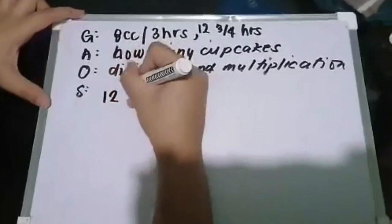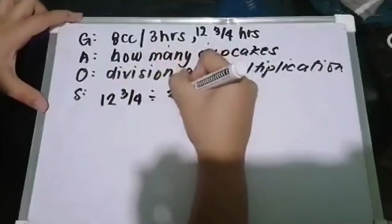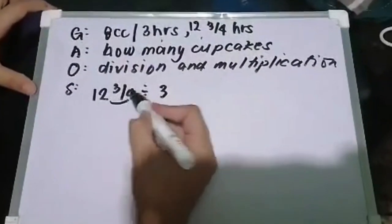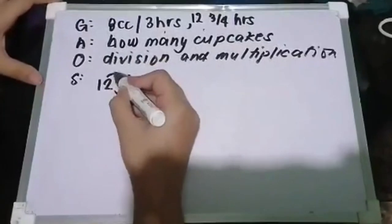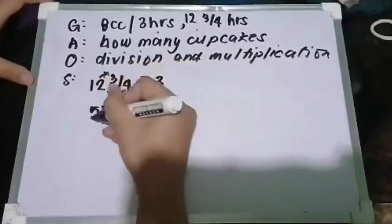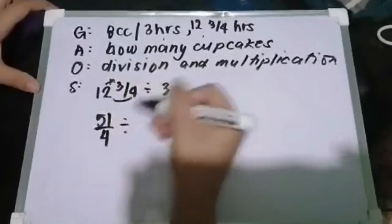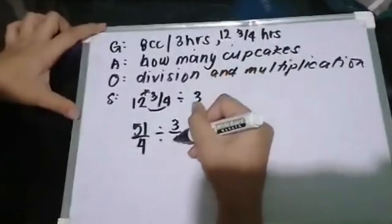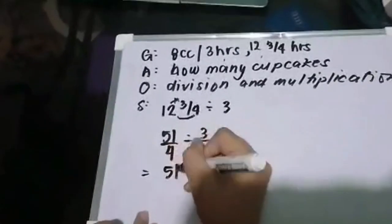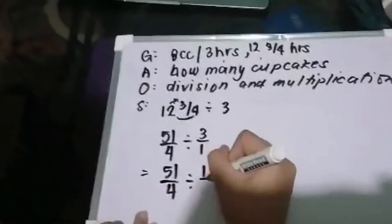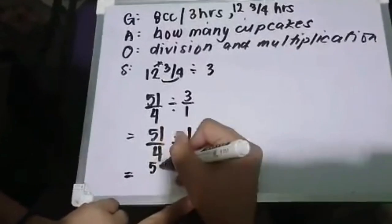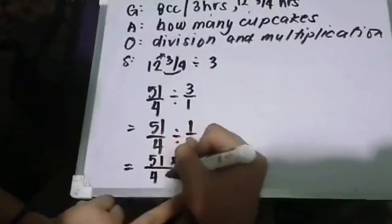So we have 12 and 3/4 hours divided by 3 hours. First, let's convert to an improper fraction. We multiply the denominator by the whole number and add the numerator. 12 times 4 is 48, plus 3 is 51. So we have 51/4 divided by 3. Put a 1 under the 3 to make it a fraction: 3/1. Now reciprocate: 51/4 times 1/3. Let's multiply: 51 times 1 over 4 times 3. So we get 51/12.